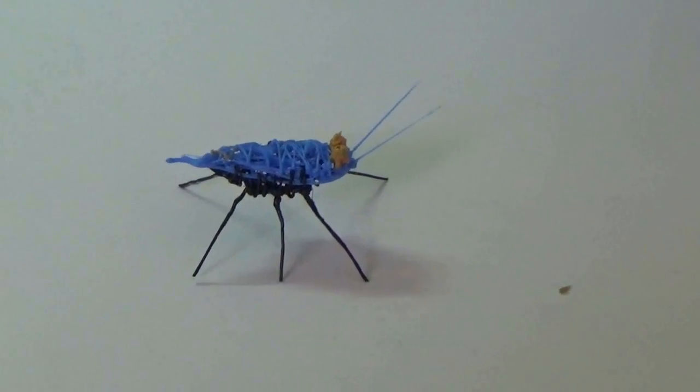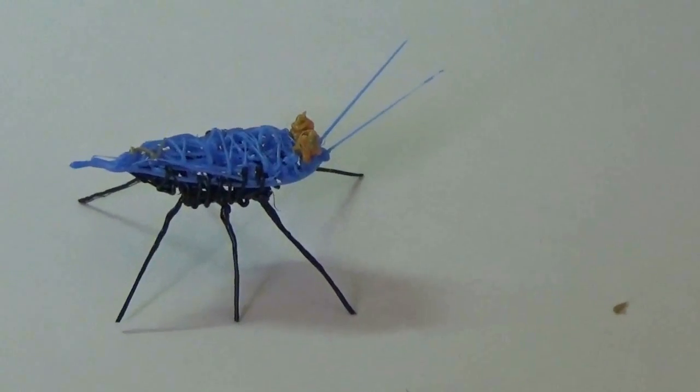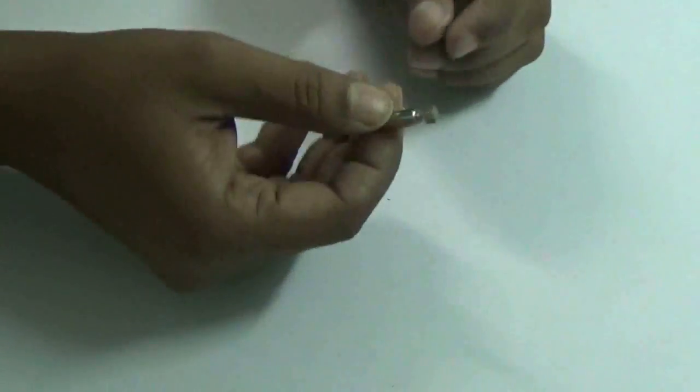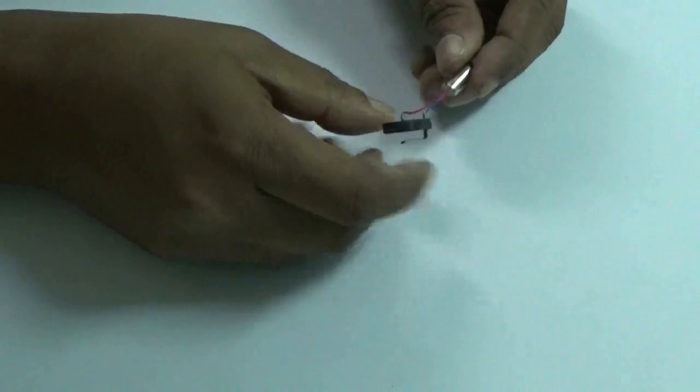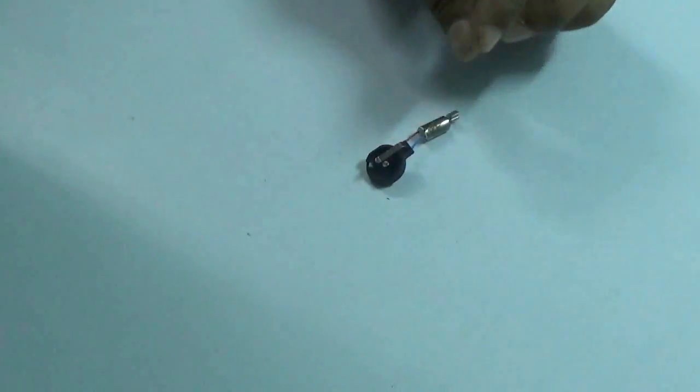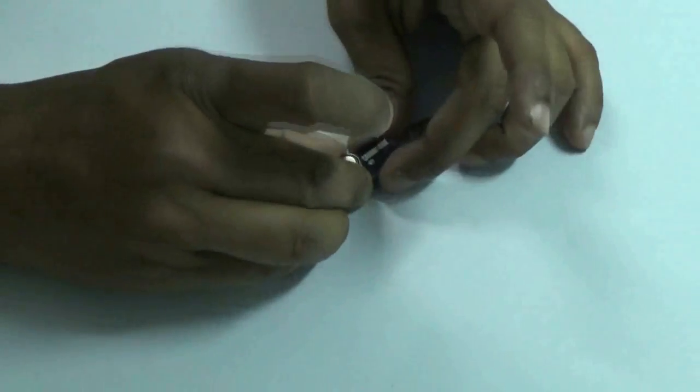This is the insect toy. I have used some orange color filament to make the eyes. This is a vibration motor from a mobile phone. I have attached it with the LR44 battery holder.